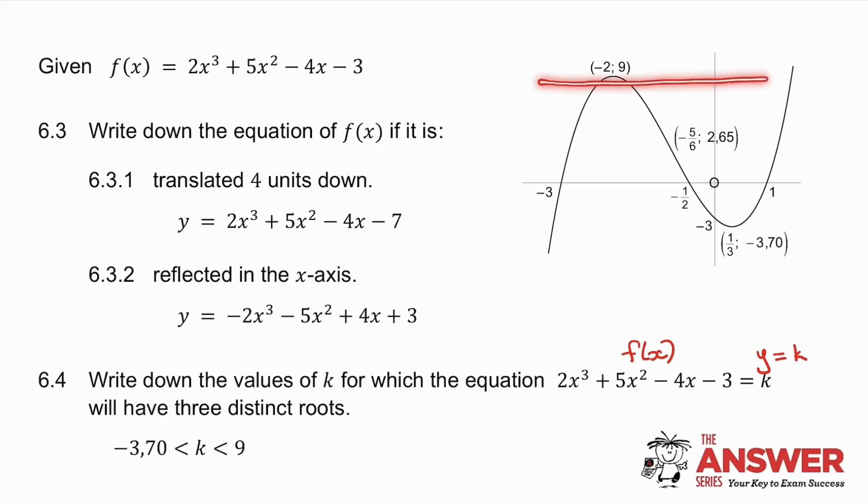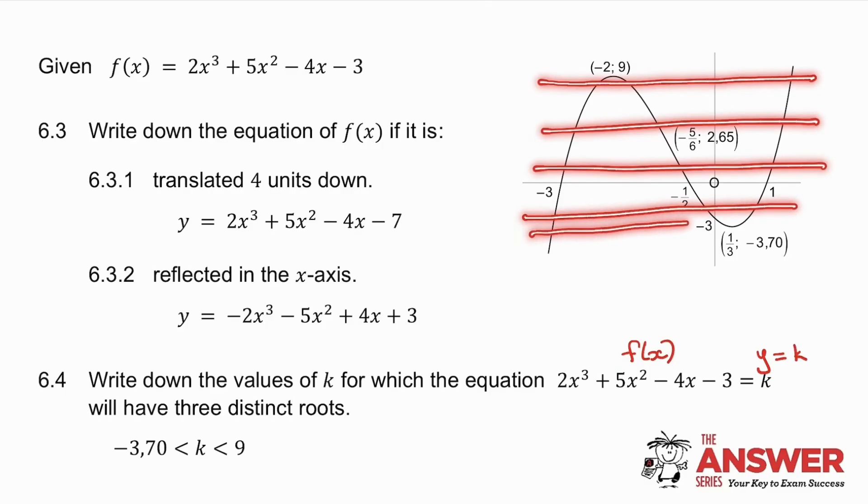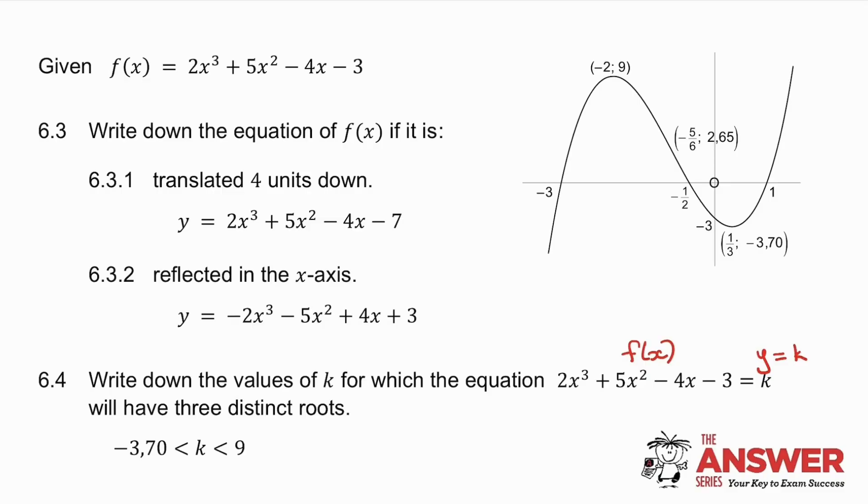Well, it's from just below the turning point all the way down to just above the other turning point. In other words, when k is greater than minus 3.70 or less than 9.